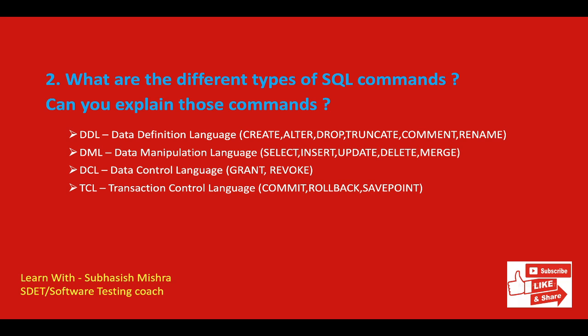DML is known as Data Manipulation Language, and these statements are used for managing data within schema objects. Examples are: SELECT, INSERT, UPDATE, DELETE, and MERGE. When you think 'Data Manipulation,' you are manipulating data in the database. INSERT means inserting a new record into a table. UPDATE means updating some existing data — you are manipulating it. SELECT is used to retrieve data. DELETE is used to delete records from a table.